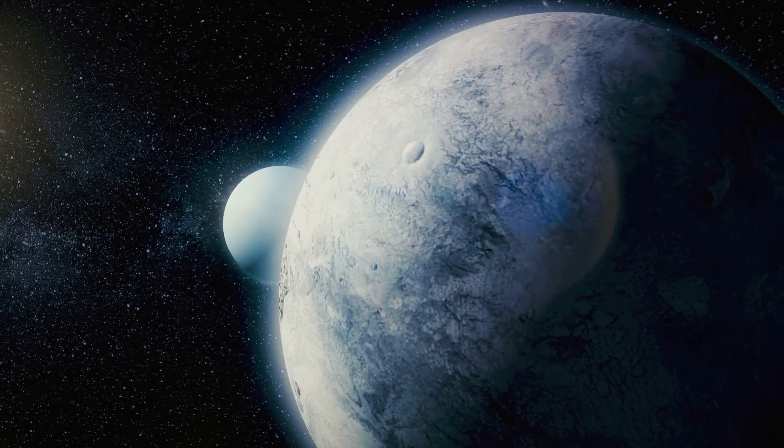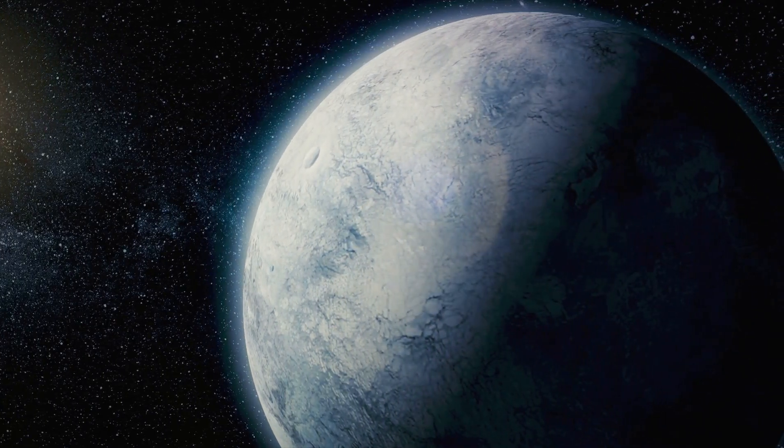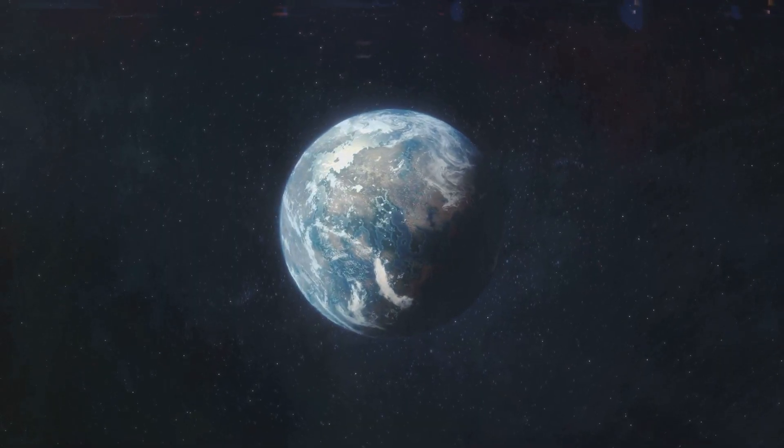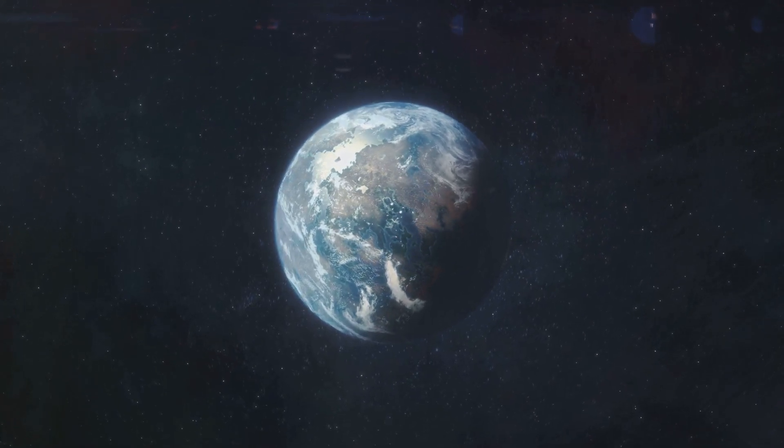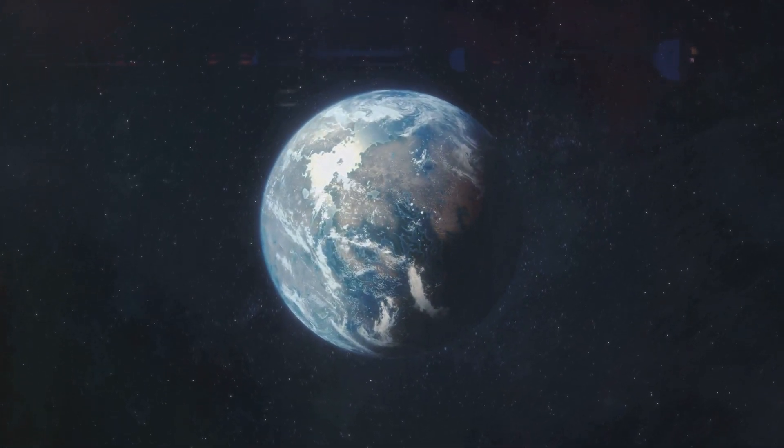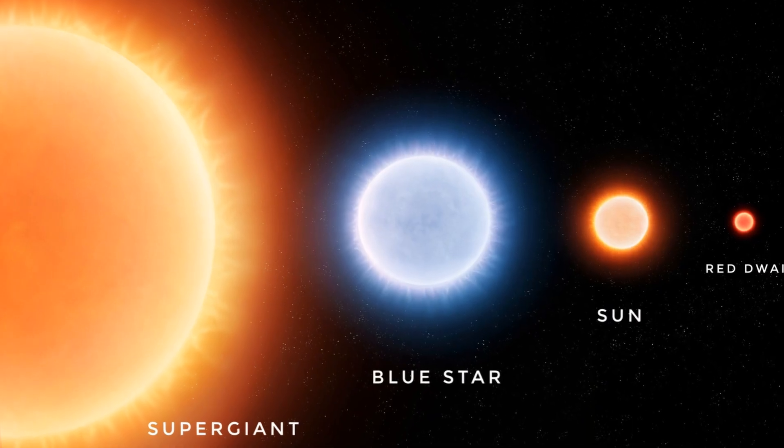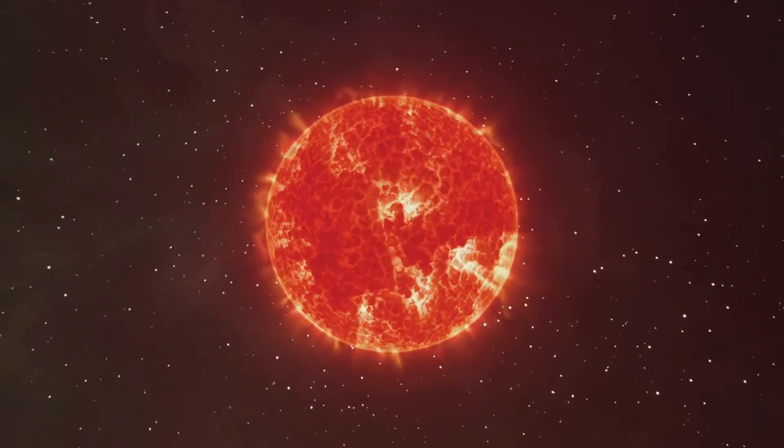At a mere 4.24 light-years away, it's the closest known star to our solar system. That's approximately 25 trillion miles or 40 trillion kilometers for those who prefer metric. To put it into perspective, if we could travel at the speed of light, it would still take us over four years to reach Proxima Centauri. But distance isn't the only thing that makes Proxima Centauri intriguing.